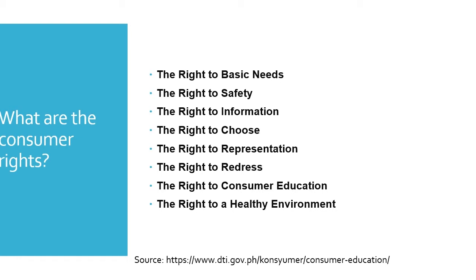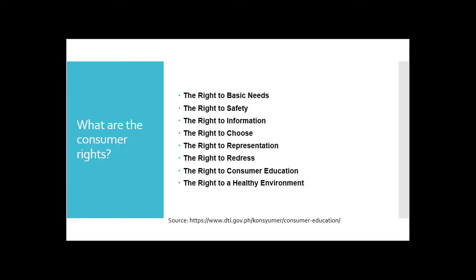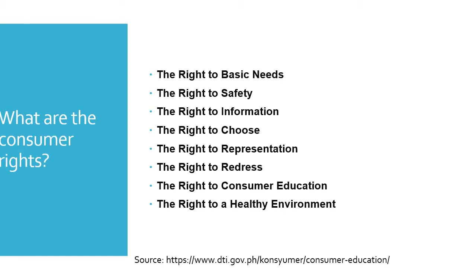Next, the right to information — the right to be protected against fraudulent, dishonest, or misleading advertising, labeling, and promotion, and the right to be given the facts and information needed to make an informed choice. The right to choose — the right to choose products at competitive prices with an assurance of satisfactory quality. The right to representation — the right to express consumer interests in the making and execution of government policies. The right to redress — the right to be compensated for misrepresentation, shoddy goods, or unsatisfactory services.